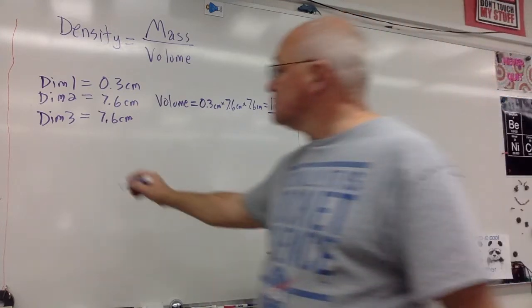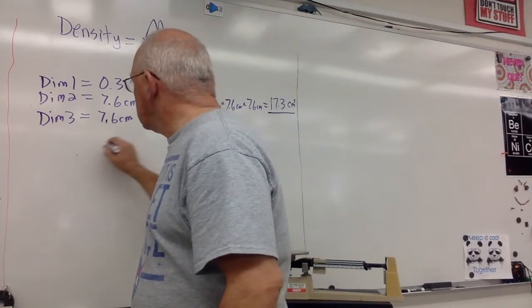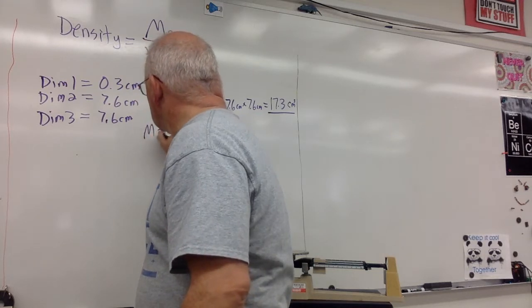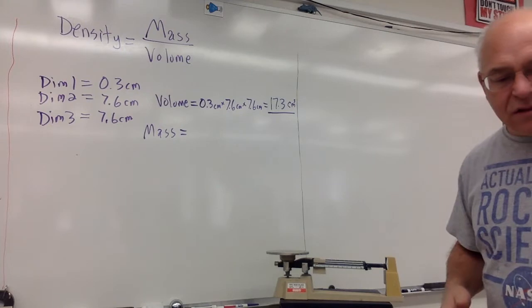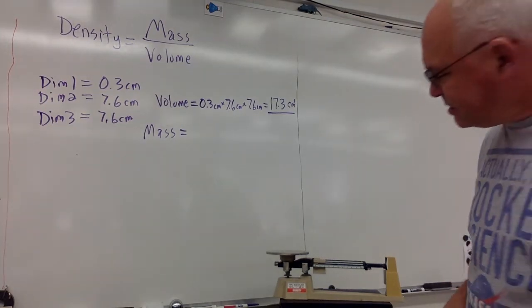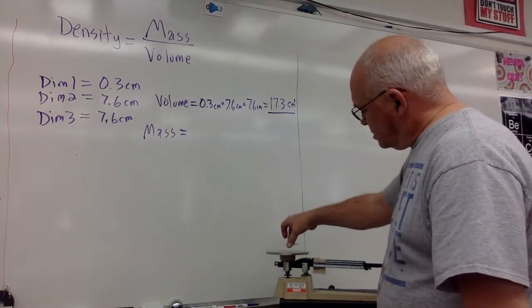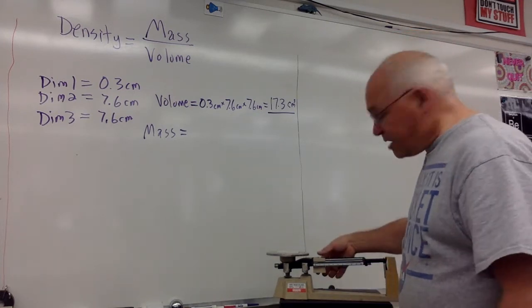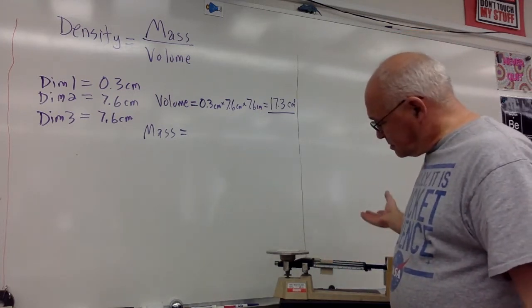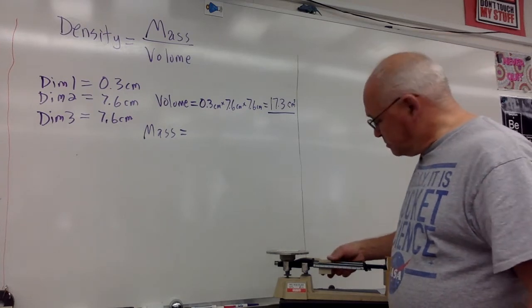Next, we need the mass. Here is our triple beam balance. We will find the mass on the triple beam balance. Put on our rectangular prism. Try the hundreds. No, it's less than 100. Move it back.